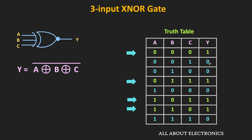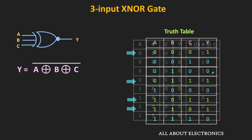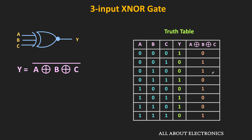The Boolean expression can be written as A XOR B XOR C, whole bar. If you see this output Y, it is the complement of the output of the XOR gate — in case of the three-input XOR gate, the output is equal to 1 when an odd number of inputs are high. So Y is the complement of A XOR B XOR C. In general, for the N-input XNOR gate, when an even number of inputs are high, the output of the logic gate will be equal to high.